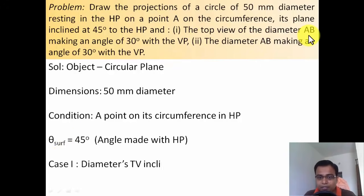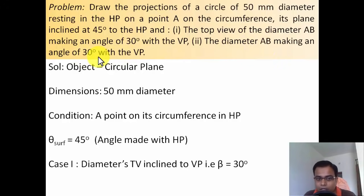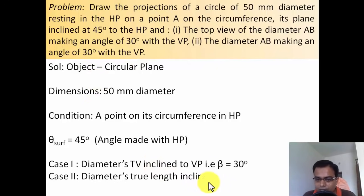In case one, the top view of the diameter makes an angle — whenever a top view makes an angle it is denoted with beta. In case two, the true length of the diameter itself makes an angle of 30 degrees with the VP, so the representation is phi equals 30.